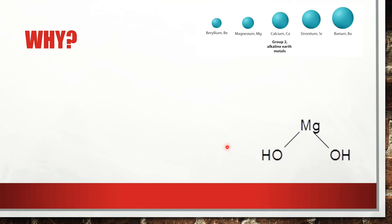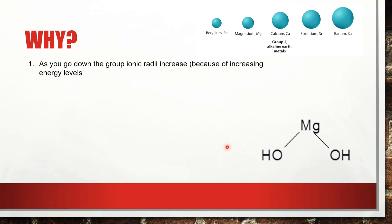As you go down the group, ionic radii increases because of the increasing number of energy levels. So if this were our beryllium ion, you can see that it has a smaller ionic radius than our barium ion. As you go down the group, ionic radii increases.